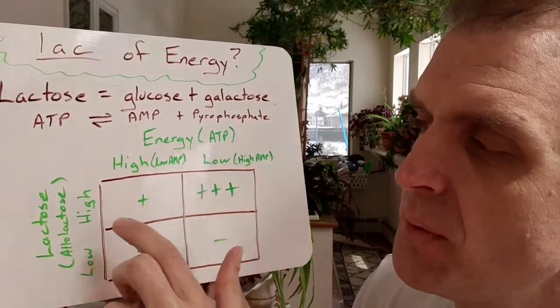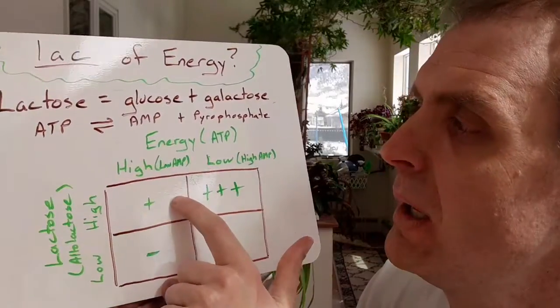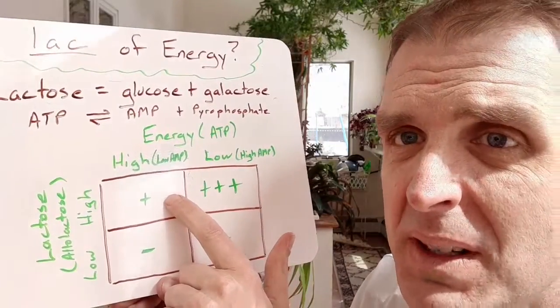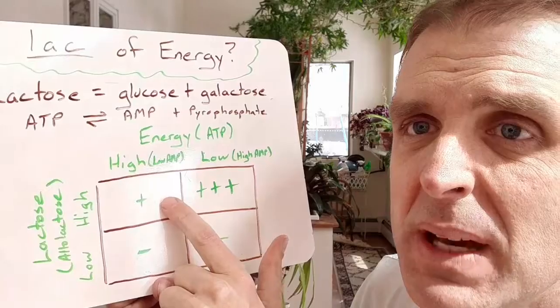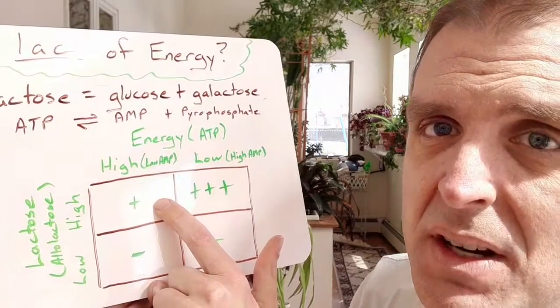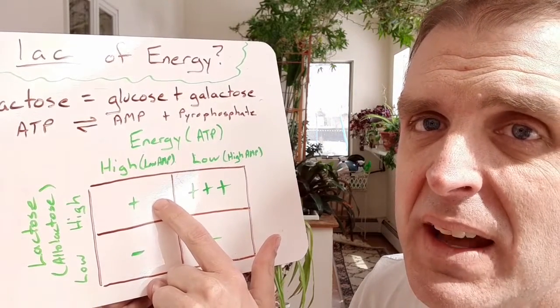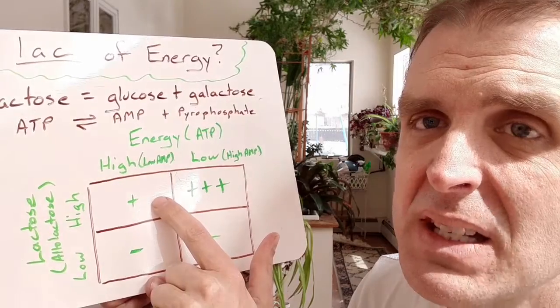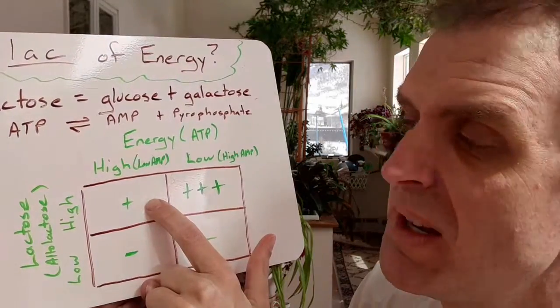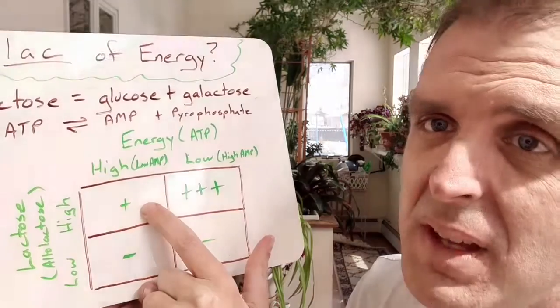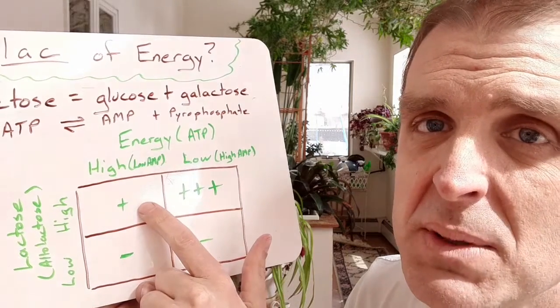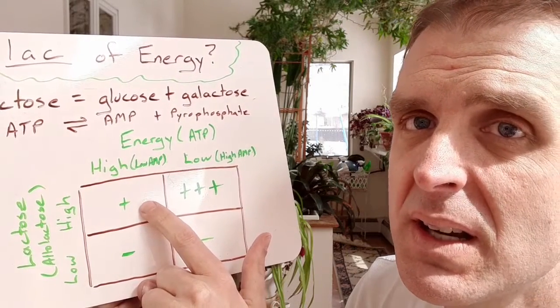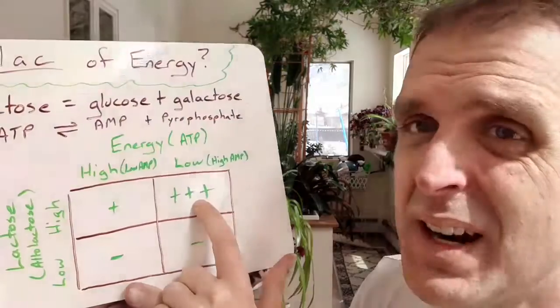If you do have lactose around, there's two possibilities to consider here. Maybe the cell has high energy, in which case it's not panicking about making lots more energy molecules, lots more ATP. So it will transcribe some genes to break down lactose, but it's not going to get in a big hurry about it.